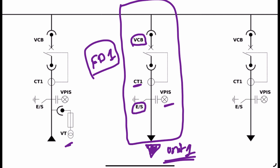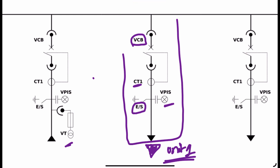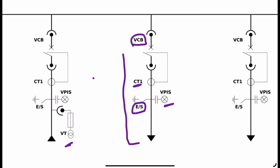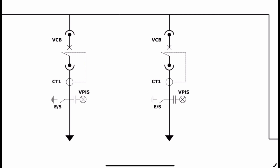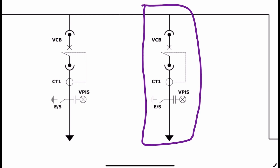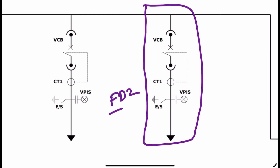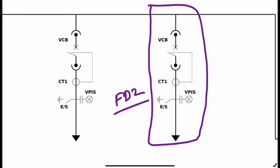Most of the equipment in the feeder panel is similar to the incomer panel we saw. The ratings may vary depending on the current rating of your incomer versus your feeder. Ratings are sometimes mentioned on the single line diagram, but in this example they are not shown. Similarly, there is an identical panel feeding manufacturing unit two — this is Feeder Panel Two.